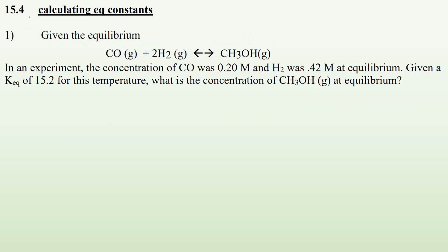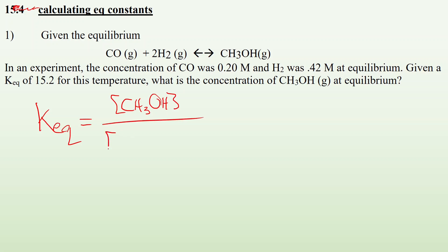Number one: given the equilibrium below, in an experiment the concentration of CO was 0.20 molar and H2 was 0.42 molar at equilibrium. Given the Keq of 15.2 for this temperature, what is the concentration of CH3OH at equilibrium? First, let's start with what the Keq expression would look like. It's going to be the concentration of the products — in this case CH3OH to the first power — all over the concentration of the reactants: CO to the first power, and H2 squared because of the two coefficient.